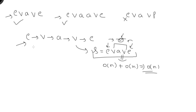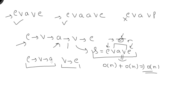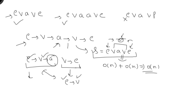In the linked-list approach, first I find the middle element. For 'evave', the middle element is 'a'. Then I split: the first list is e→v→a and the second list is v→e. I reverse the second list to get e→v. Now I compare both lists one by one: e matches e, v matches v. If a single node remains in the first list with none in the second (odd case), I can confirm the list is a palindrome.